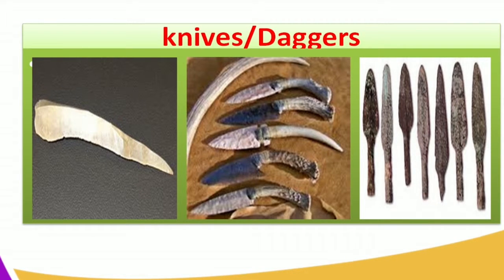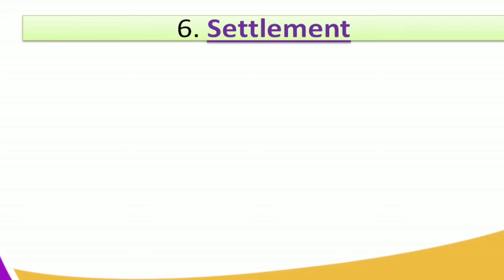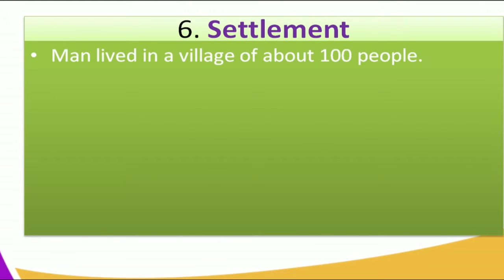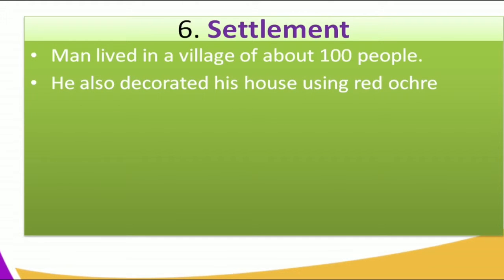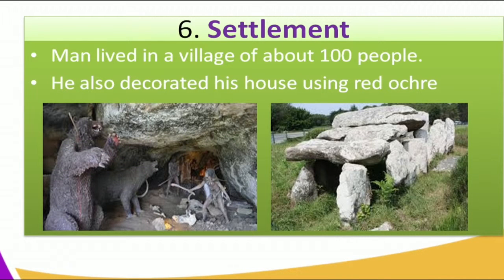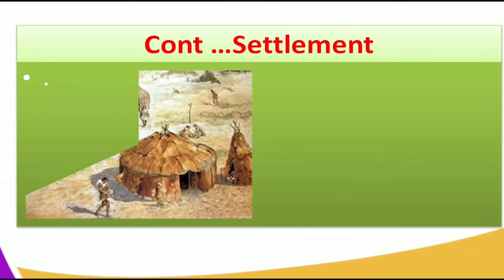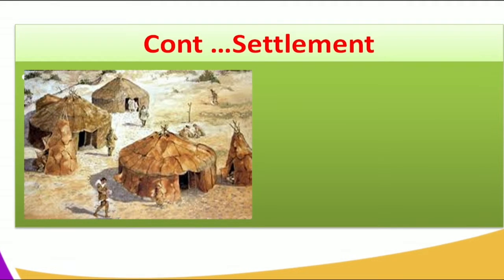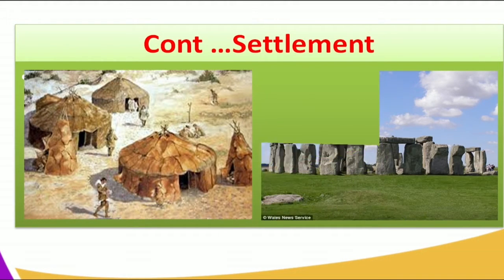Another characteristic of this period is settlement. Man lived in villages of about 100 people. He decorated his house using red ochre, living in caves and under rock shelters. Other settlements were made of animal skin, with roofs to protect from direct radiation, built under stone caves.